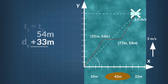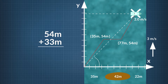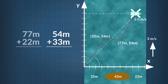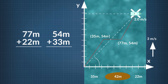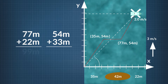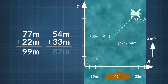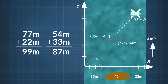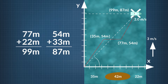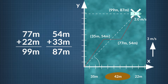Adding 33 meters to the boat's vertical displacement and 22 meters to its horizontal displacement, we find that the position of the boat when it reaches the other side of the river is 99 meters in the positive x direction and 87 meters in the positive y direction. We can answer the first question for this exercise: the boat moves 87 meters downstream during the crossing.